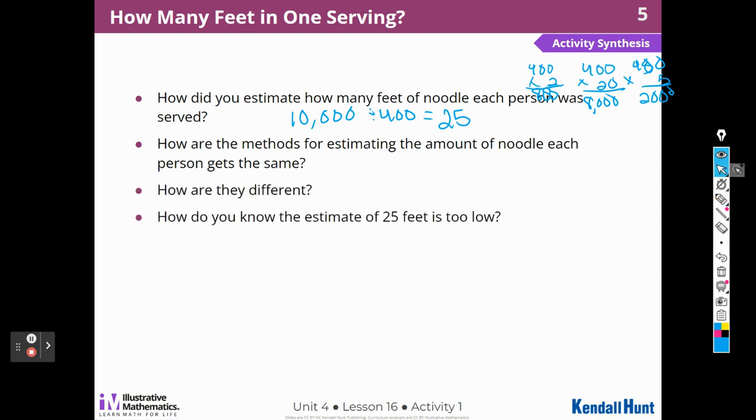How do you know the estimate of 25 feet is too low? Because I took the 10,000, right? The original number was 10,119 feet, and I made that a 10,000. So I went down with my estimate. And so 25 feet is going to be lower than the correct amount.